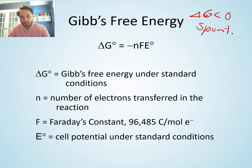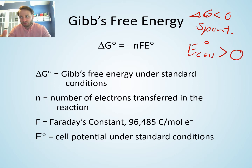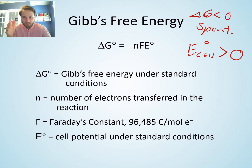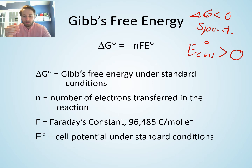If delta G is less than zero, that means you have a spontaneous reaction, which means the standard cell potential E° is greater than zero for a spontaneous reaction. For a galvanic cell — a spontaneous electrochemical reaction — you have a positive cell potential and a negative Gibbs free energy.